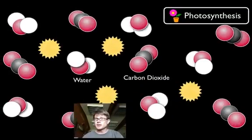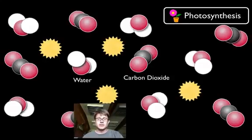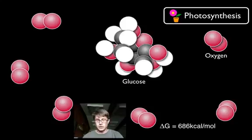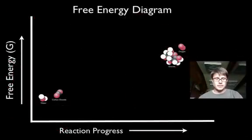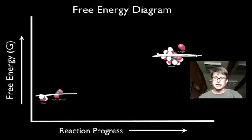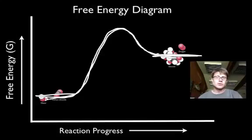Now let's think about photosynthesis. What do you need? Really only four things: carbon dioxide, water, sunlight, and plants. In photosynthesis, we store that energy in glucose. The delta G value is positive — it's an endergonic reaction. On an energy diagram, we start with a lower amount of energy and end with more, storing energy in glucose. The activation energy for photosynthesis comes from the sun. These two reactions — releasing energy and storing energy — allow life to exist.